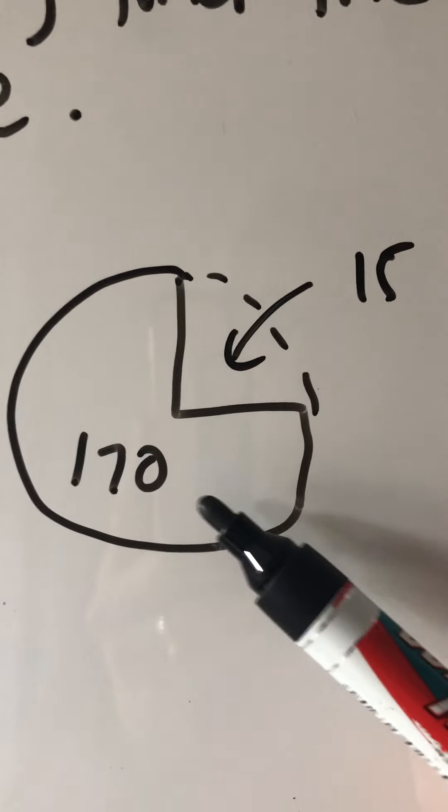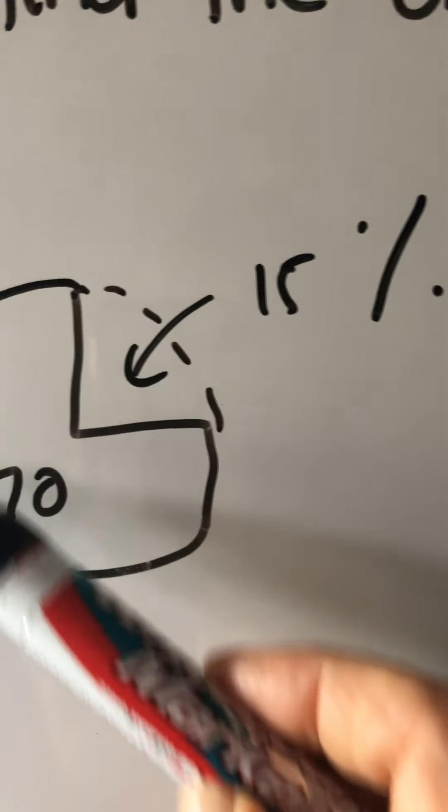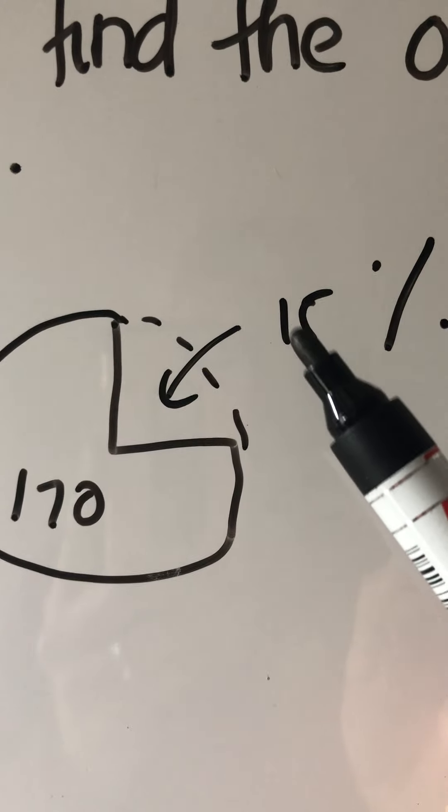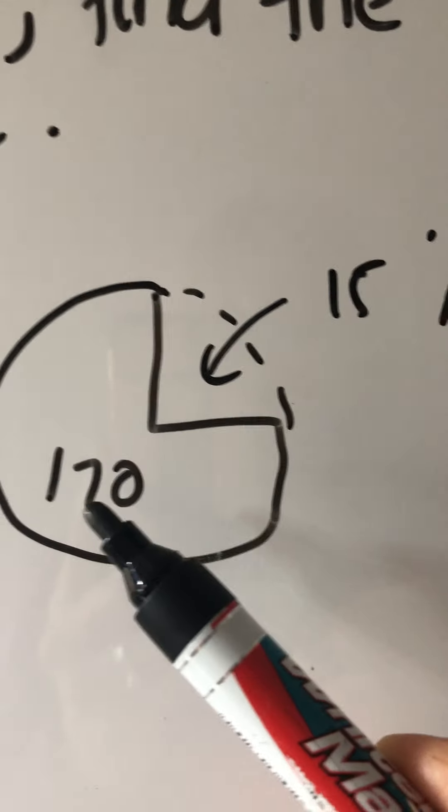Why? Because if we do that, we're finding 15% of a smaller number. Remember, originally the price was 200, and they found 15% of 200, which was 30, and so we got 170.